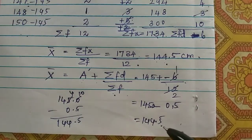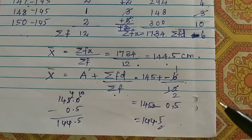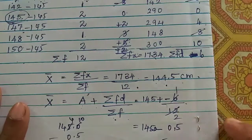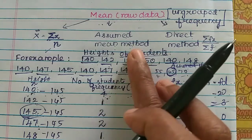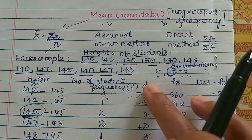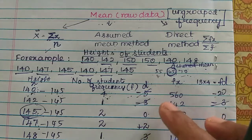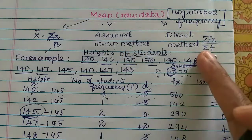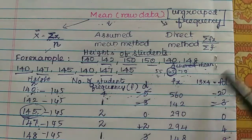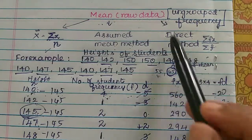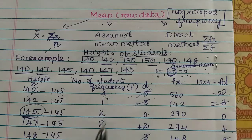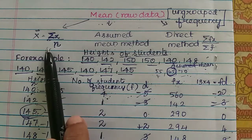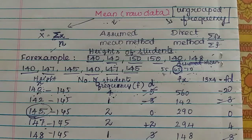So both the direct method and the assumed mean method give the same answer: 144.5 cm. The methods are different but the answer is the same. In the assumed mean method, we assume a middle number, find deviations, and use the formula A + sigma fd by sigma f.